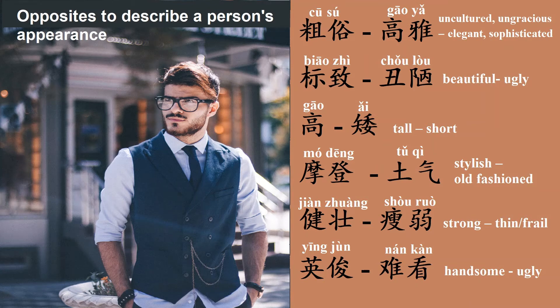Opposites to describe a person's appearance. 粗俗, uncultured, ungracious. The opposite of 粗俗 is 高牙, elegant, sophisticated. 标志, beautiful. The opposite of 标志 is 丑肉, ugly.